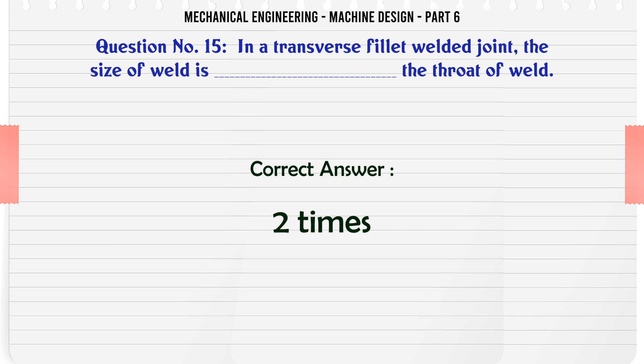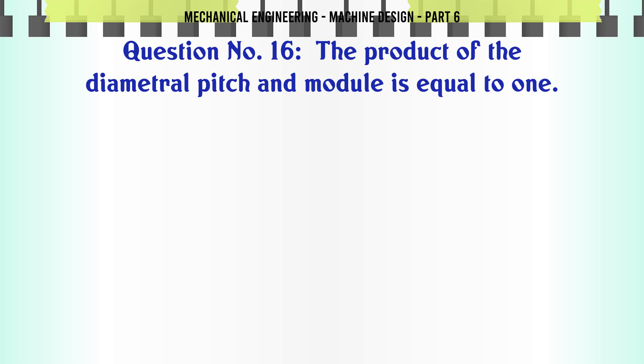The product of the diametral pitch and module is equal to 1. A) correct, B) incorrect. The correct answer is correct.